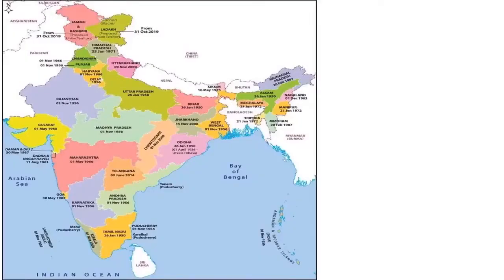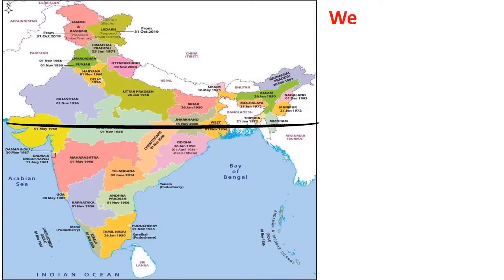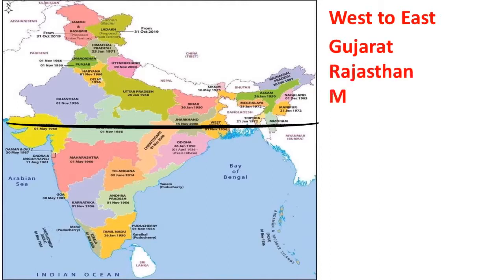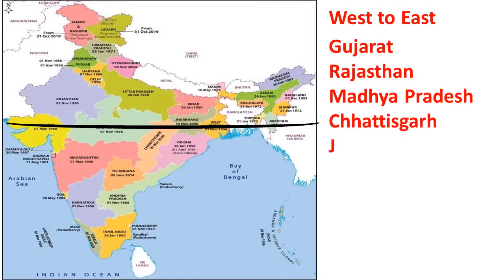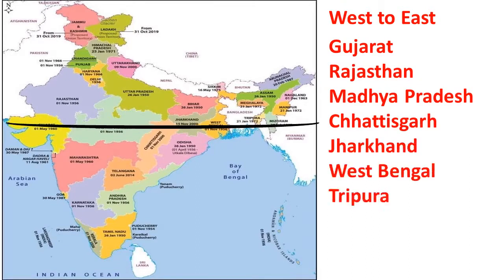Now let us know about the Tropic of Cancer. The Tropic of Cancer is the imaginary line at 23 and a half degrees north of the equator. In India, the Tropic of Cancer passes through eight states: Gujarat, Rajasthan, Madhya Pradesh, Chhattisgarh, Jharkhand, West Bengal, Tripura, and Mizoram.